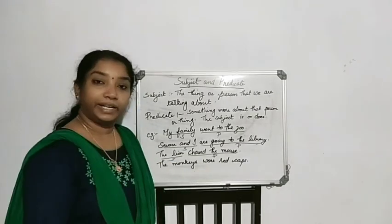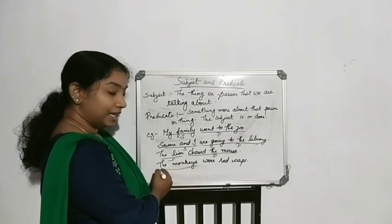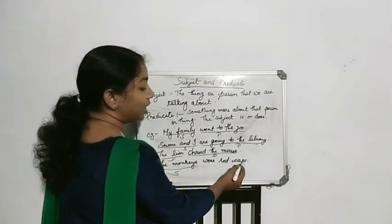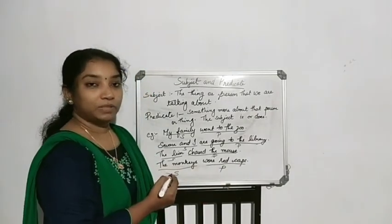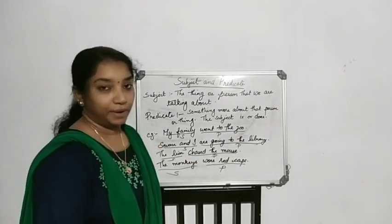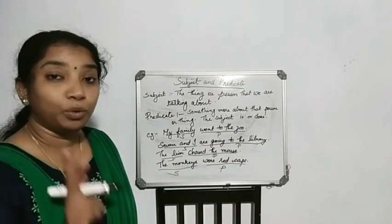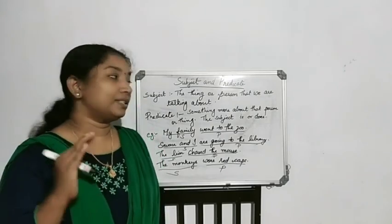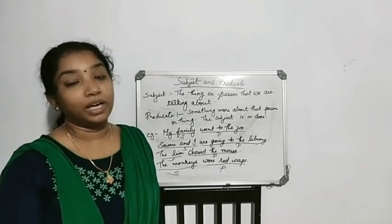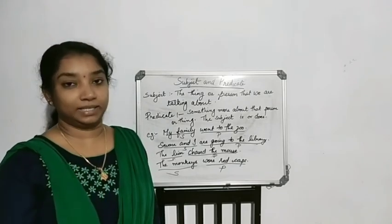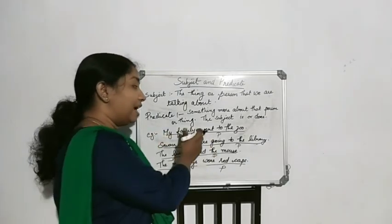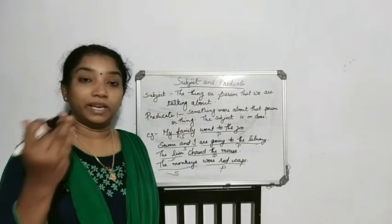'The monkey wore red caps.' Who is the subject here? Monkey — we are talking about monkey. So monkey is the subject, and wore red caps is the predicate. Predicate always begins with the verb — here the verb is wore. So a sentence has two parts: the subject and the predicate. Subject is a thing or a person we are talking about; predicate is something more about that person or thing — what a person is or does. Predicate always begins with the verb.